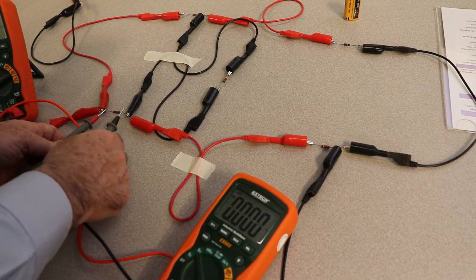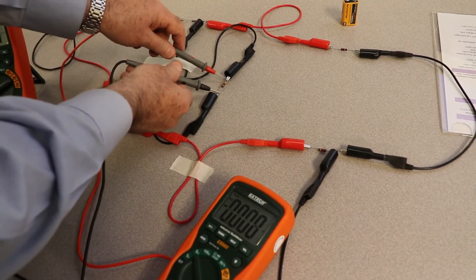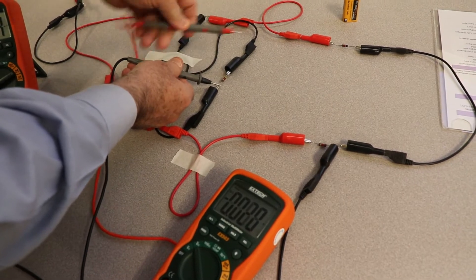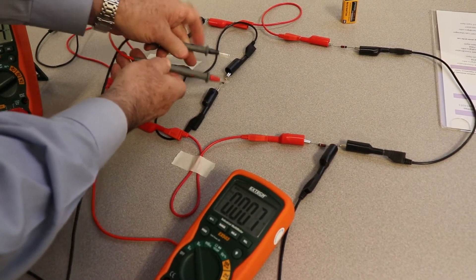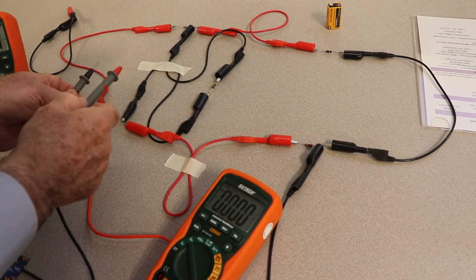So that means the current's flowing from positive red to black. So if I go like that and I get a minus sign, it's not going this way, it's going that way. So it all depends on the resistor arrangement in the circuit.